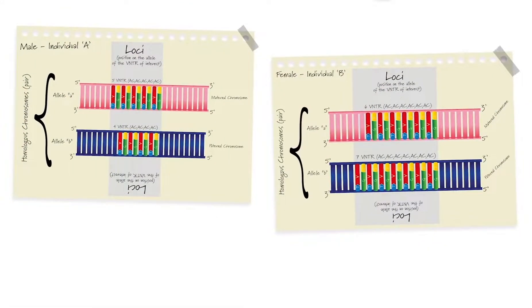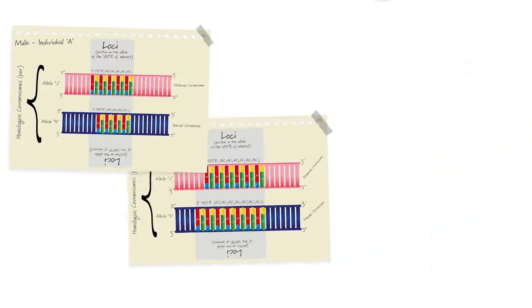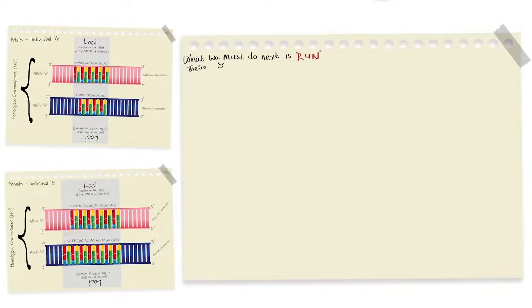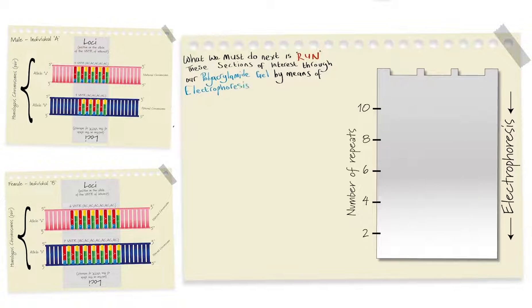Okay, so let's get back to our male and female sections of DNA. What we must do next is run these sections of interest through our polyacrylamide gel by means of electrophoresis, which will allow us to visualise the banding patterns and compare their DNA. We'll talk more about electrophoresis in another lesson, but for now, the aim here is to show the bands of DNA based upon the number of the VNTRs from each individual.